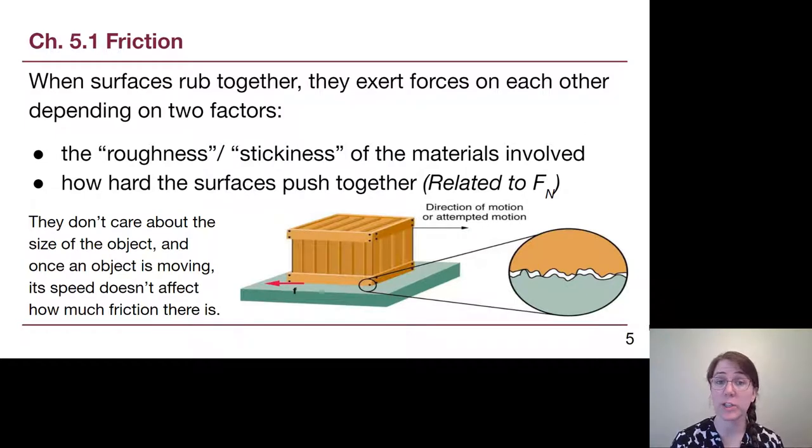Now the important thing is that friction only cares about these two items in the bulleted list, the materials themselves and the normal force. It doesn't care about the size of an object because if an object is very wide, although normal force at each spot is not very big, there's a large surface area for it to press against the surface. And so inherently it really does come down just to the normal force as we calculate it. And once an object is moving, friction doesn't care about how fast we're going. So if we're going very slowly, there's a certain amount of friction acting against us. If we're going very quickly, there's still the same amount of friction acting against us.